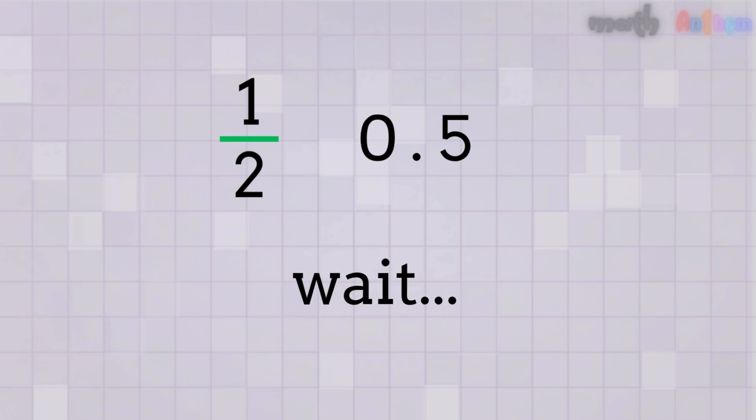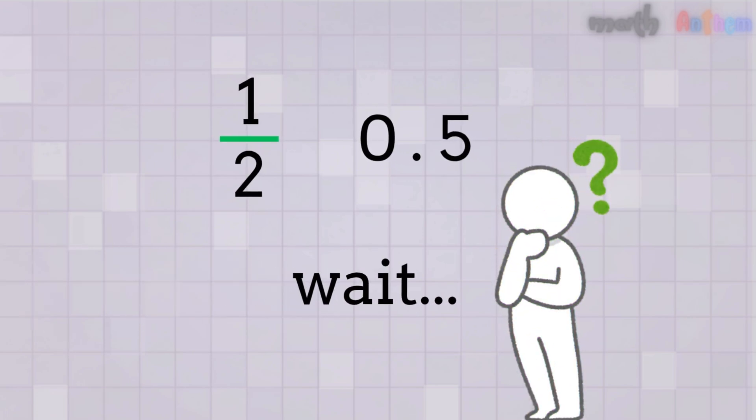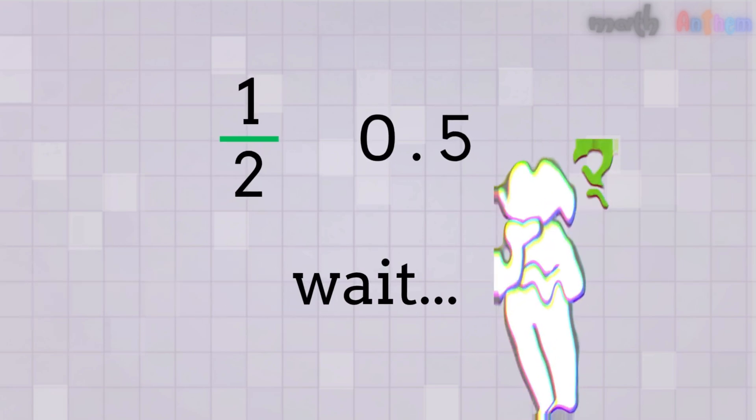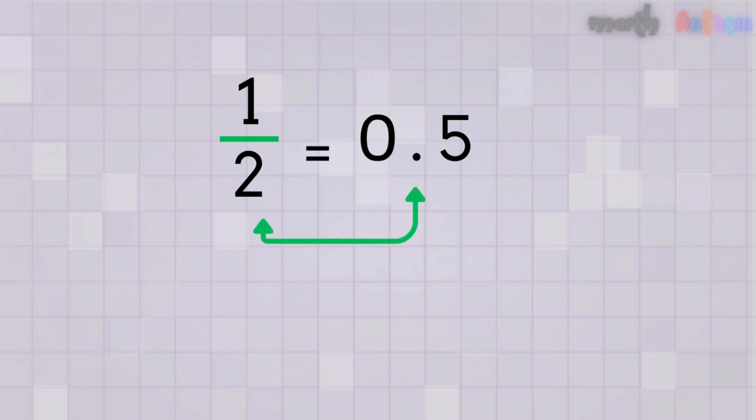Have you ever seen a number like one-half and another number like 0.5 and wondered, wait, are these two numbers different? Nope, they're just two different ways to show the same amount. Today we're going to learn how to turn a fraction into a decimal.